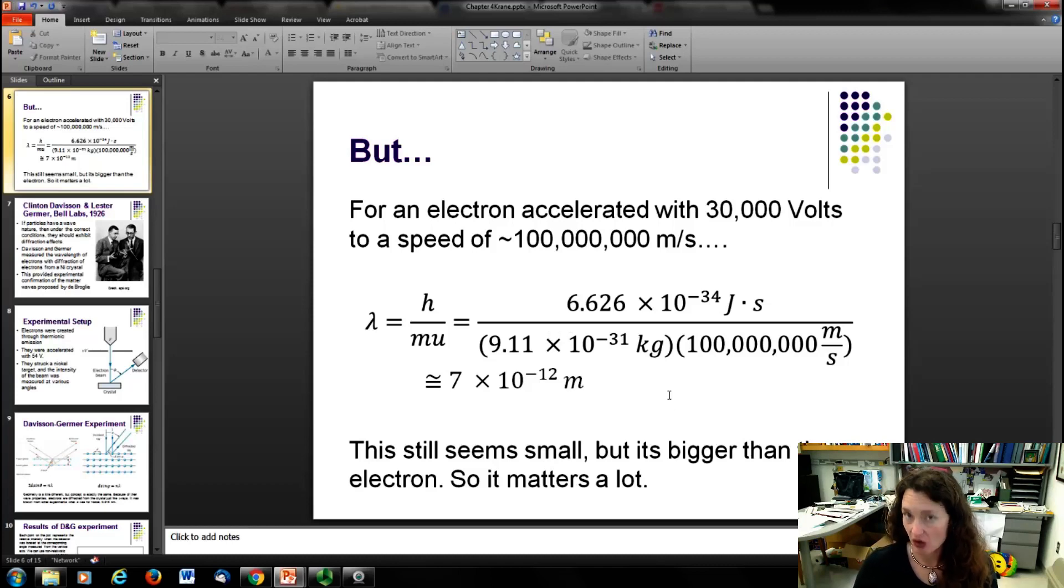Now this is still small, but if you compare it to the size of the object itself, the size of an electron, as far as we know, electrons are pretty much point particles. Well, the wavelength then dominates because it's larger than the size of the object itself. So it matters a lot more for teeny tiny things.